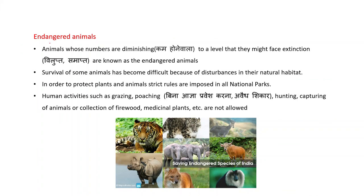Endangered animals are animals whose numbers are diminishing — coming down to a level where they might face extinction. Extinction means a species is completely lost. Survival of some animals has become difficult because of disturbances in their natural habitat.